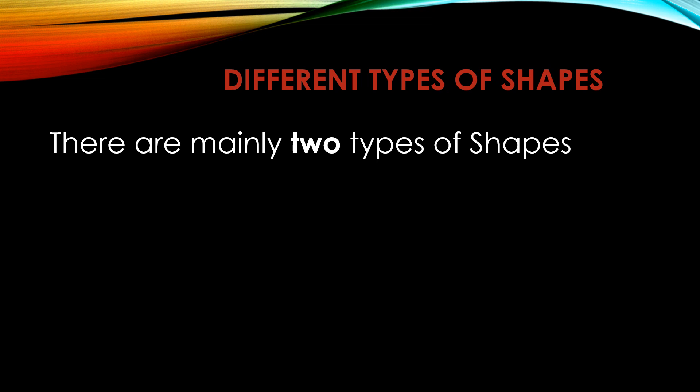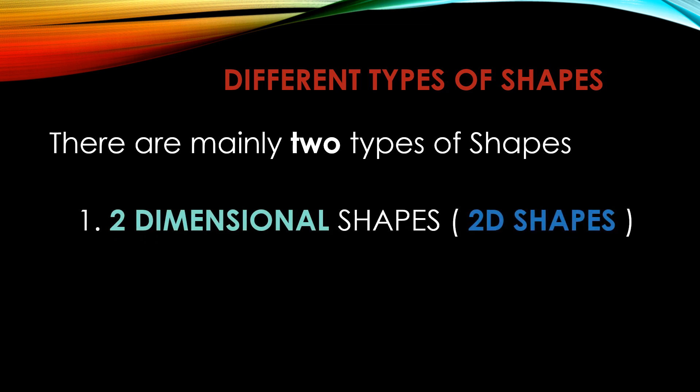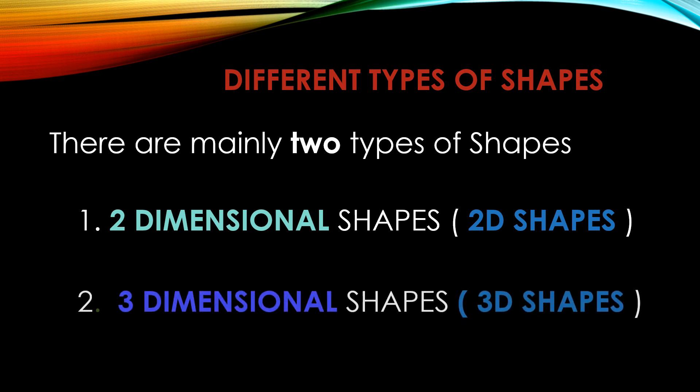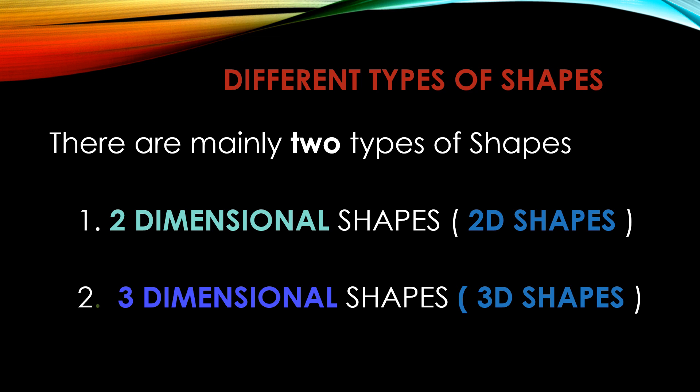There are mainly two types of shapes. First one: two-dimensional shapes, or in short you can say 2D shapes. Second one is three-dimensional shapes, or 3D shapes.